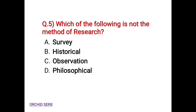Question 5: Which of the following is not the method of research? Option A: Survey. Option B: Historical. Option C: Observation. Option D: Philosophical. As we know, survey, historical, and philosophical are the methods of research. Hence, the correct answer is Option C, Observation.